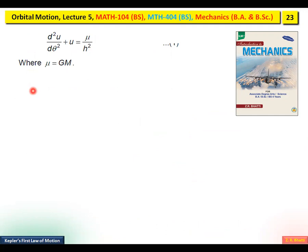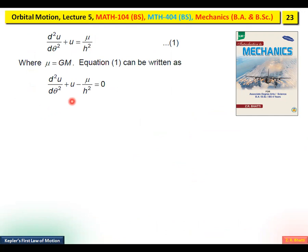We label this as Equation 1. Equation 1 can be written as: d²u/dθ² + (u − μ/h²) = 0. We have rewritten it in this form.